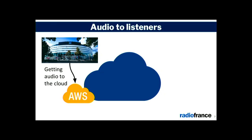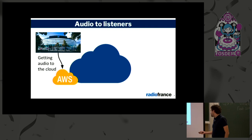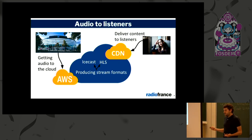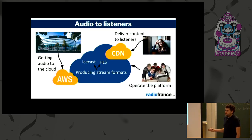So how do we build our platform? First, transport the audio from the home of Radio France where it's produced to the cloud — we are in AWS. Next, produce the two formats, IceCast and HLS. Then deliver the content to listeners — as I said, we have a lot of listeners. And finally, monitor the platform, like any system in production.